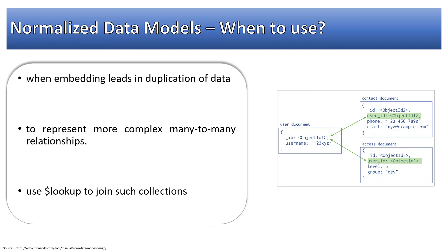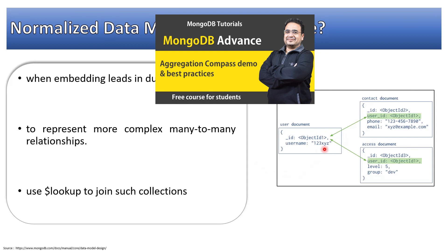Use dollar lookup to join such collections. Dollar lookup is a MongoDB construct which can be used to perform joins across collections. This will help to fetch data from the collections where the data is designed in the normalized form. If you see on the right-hand side, this is an example where we have a user document, we have a contact document and access document. If you see, user ID is present inside contact document and access document also. If we want to fetch data, we can use dollar lookup.